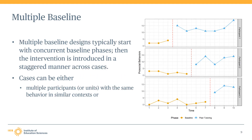The next design is the multiple baseline design, characterized by multiple cases entering the baseline phase at similar times, with the intervention introduced at times that are staggered across cases. This allows for three intervention effects to be observed at the staggered introduction of the intervention. The design also allows for comparison across baseline phases — for instance, if other baseline phases demonstrated changes in the direction of the intervention effect when the first case received the intervention, this is potential evidence that the observed change is due to some shared effect of history or maturation rather than the intervention.